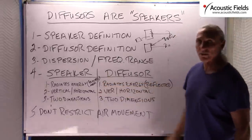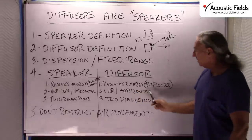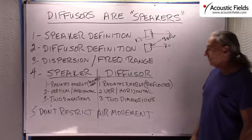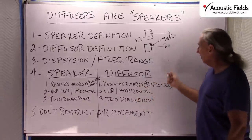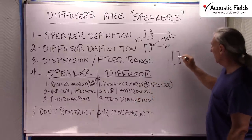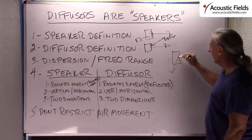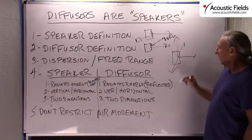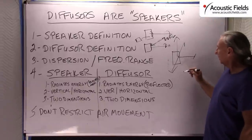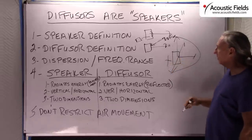A speaker radiates energy — it's electromechanical. And the diffuser does the same thing with reflected energy. We have vertical and horizontal dimensions for a speaker; a speaker radiates energy in these two dimensions, sometimes three. The goal is to move and manage all that energy and then the unwanted pressure that goes with it.